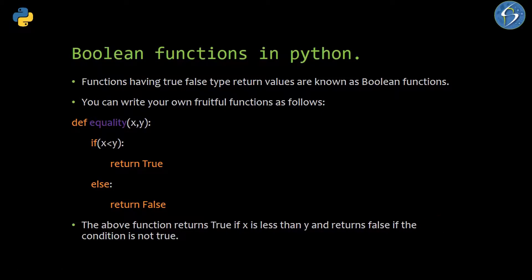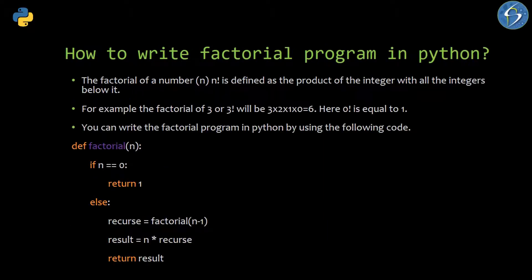If I change the call to check(3, 2) then I will get false, because 3 is greater than 2. That's how you can use boolean fruitful functions in Python programming. The next part is how to write a factorial program in Python, where we will implement both fruitful function and recursive function functionality.